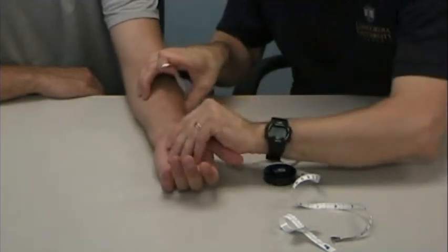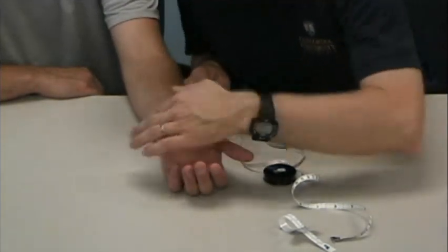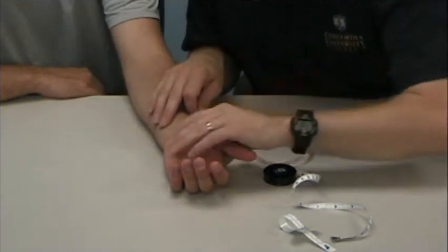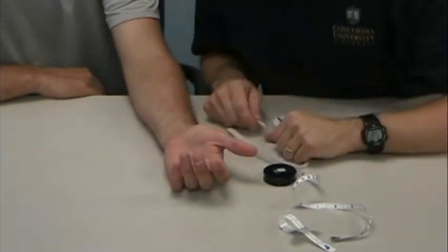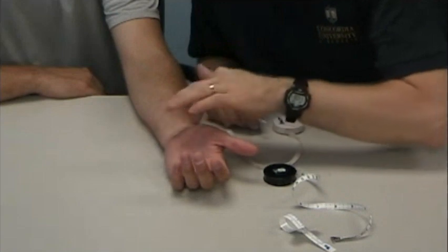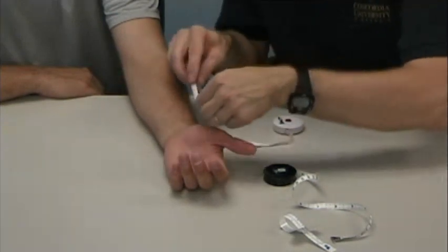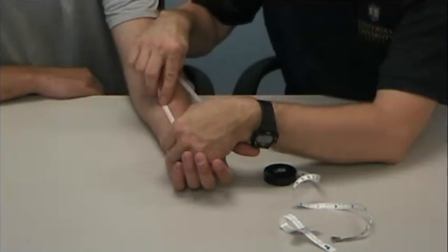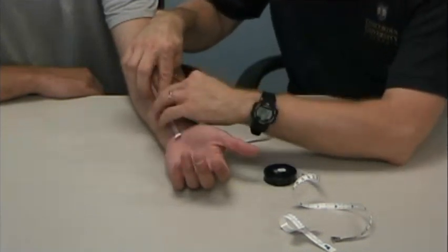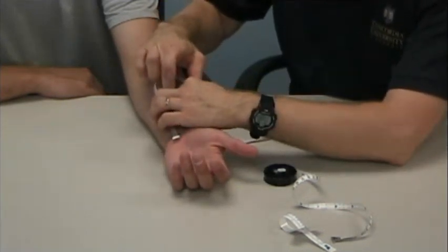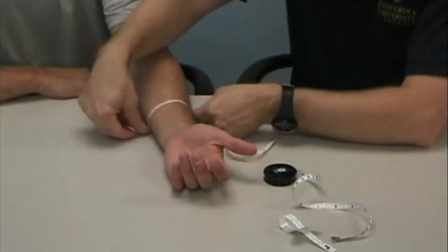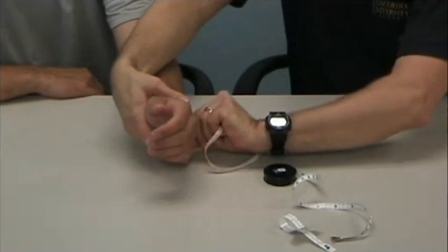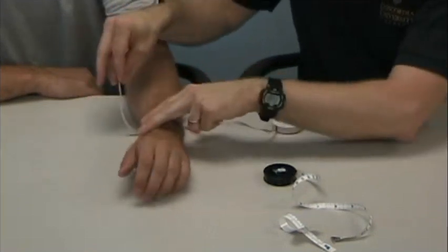For example, I might use his distal wrist crease, which is fairly prominent. His proximal wrist crease is very subtle. So I'd probably use his distal wrist crease and then say, I'm going to measure 10 centimeters proximal to his distal wrist crease. I would actually use a pen to mark that and then measure around there. So it's a fairly quick, fairly easy way to get a measurement of edema.